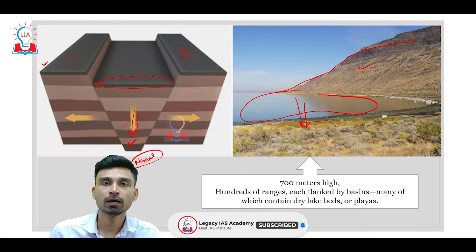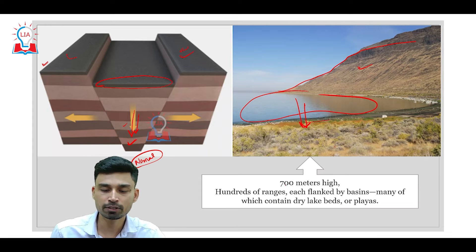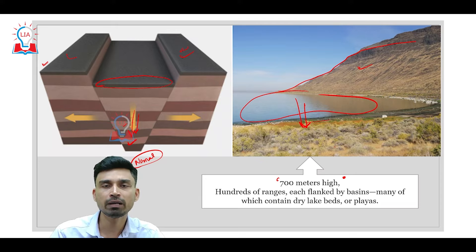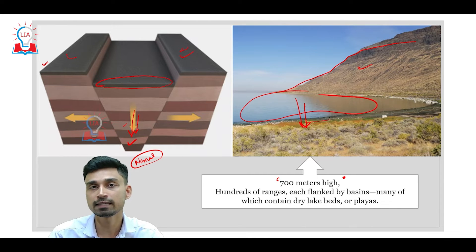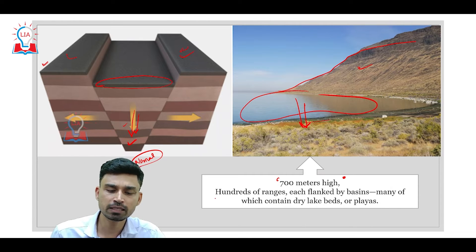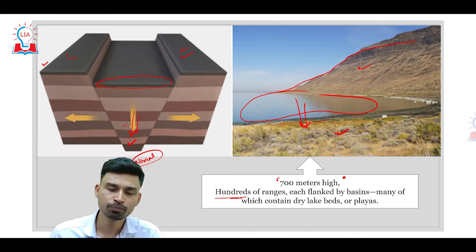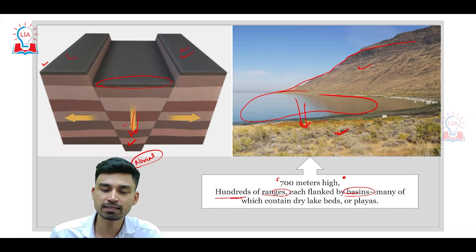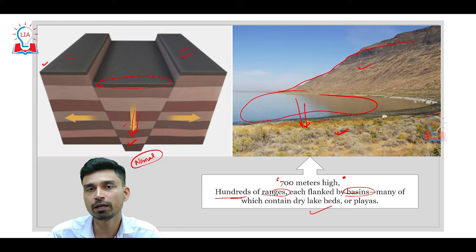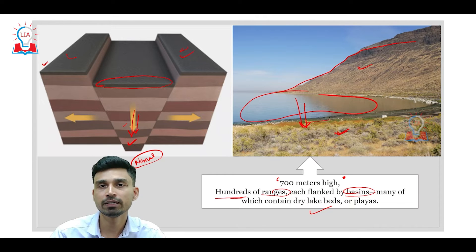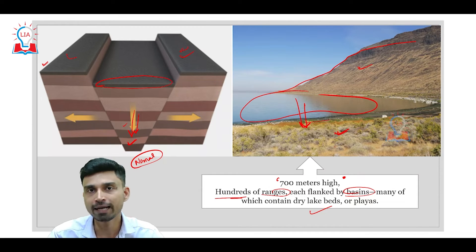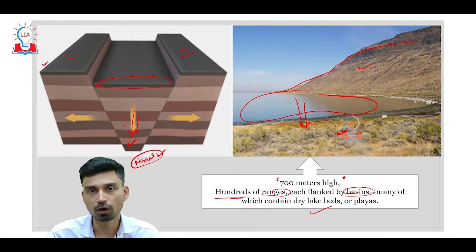The Abut Rim is almost 700 meters high. Many times, escarpments develop not as a single landform but in hundreds of landforms. This is an example of basin and range topography, where hundreds of ranges, each flanked by basins — many of which contain dry lake beds or playas — develop when there is a large-scale movement over a wide area due to the development of normal faults.